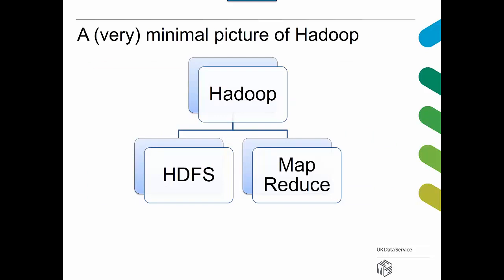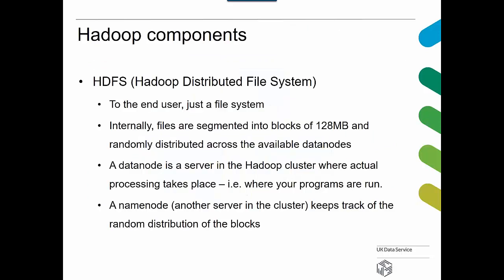Starting with HDFS — to the end user it's just a file system. But internally, files are segmented into blocks of 128 megabytes and randomly distributed across all available data nodes. A data node is a server in the Hadoop cluster where actual processing takes place. HDFS places the data onto these data nodes and programs are run from there. The name node is another server in the cluster which keeps track of where all the blocks of your data are.